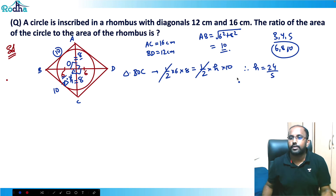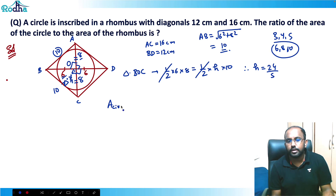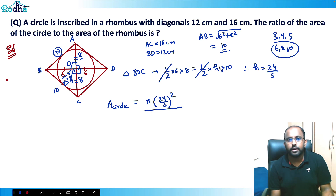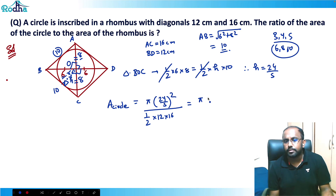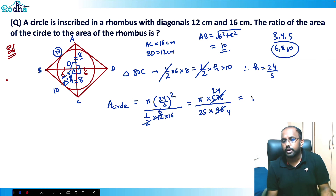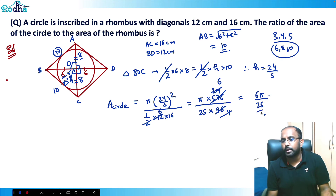The height h = 24/5 is also the radius of the inscribed circle. So the ratio of the area of the circle to the area of the rhombus is: π × (24/5)² divided by (1/2 × 12 × 16) = π × 576/25 divided by 96, which simplifies to 6π/25.